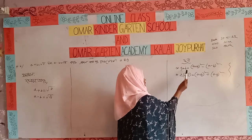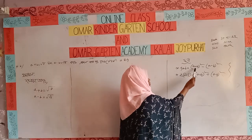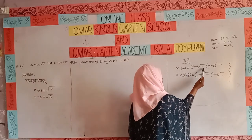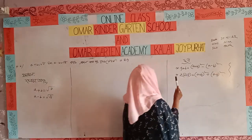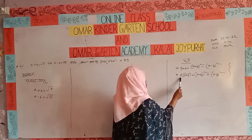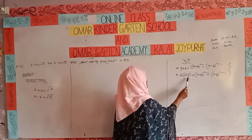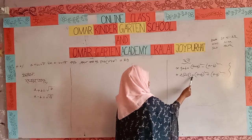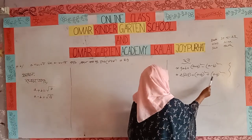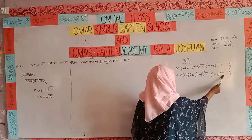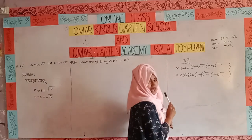4ab equals (a plus b) whole square minus (a minus b) whole square. 2(a squared plus b squared) equals (a plus b) whole square plus (a minus b) whole square.